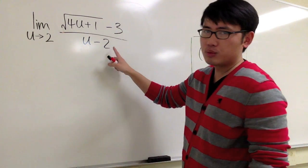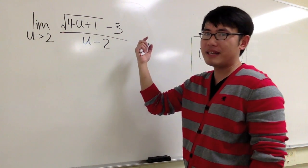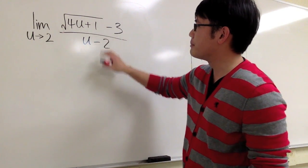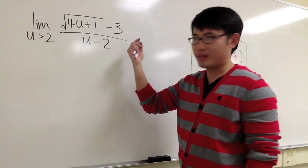In this situation, because we have the square root, the best bet is to multiply the top and bottom by the conjugate. So we'll do that.